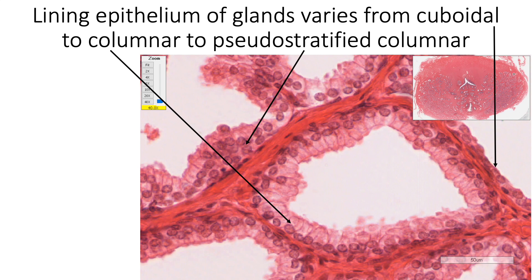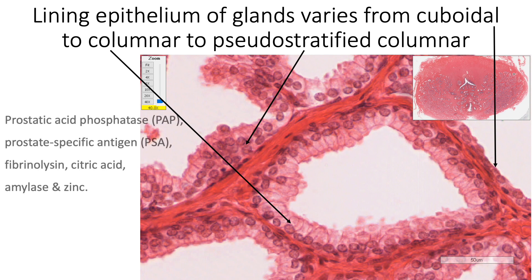The secretory activity of these epithelial cells is influenced by testosterone and other androgens secreted from the suprarenal glands. These cells secrete a clear fluid rich in prostatic acid phosphatase, prostate-specific antigen, fibrinolysin, citric acid, amylase, and zinc. Both prostatic acid phosphatase and prostate-specific antigen act as tumor biomarkers.